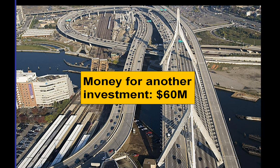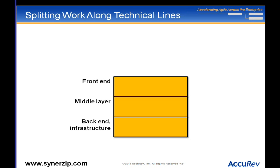Now let's get down to brass tacks on splitting. Often when people are trying to break things down to fit into agile, they think of breaking it into layers: I'll do the back end, the middle layer, the front end. But how much are you going to pay me if I get the whole back end done? Nothing — because it provides no value until the front end and middle layer are done too. So let's look at this another way: let's split by value.